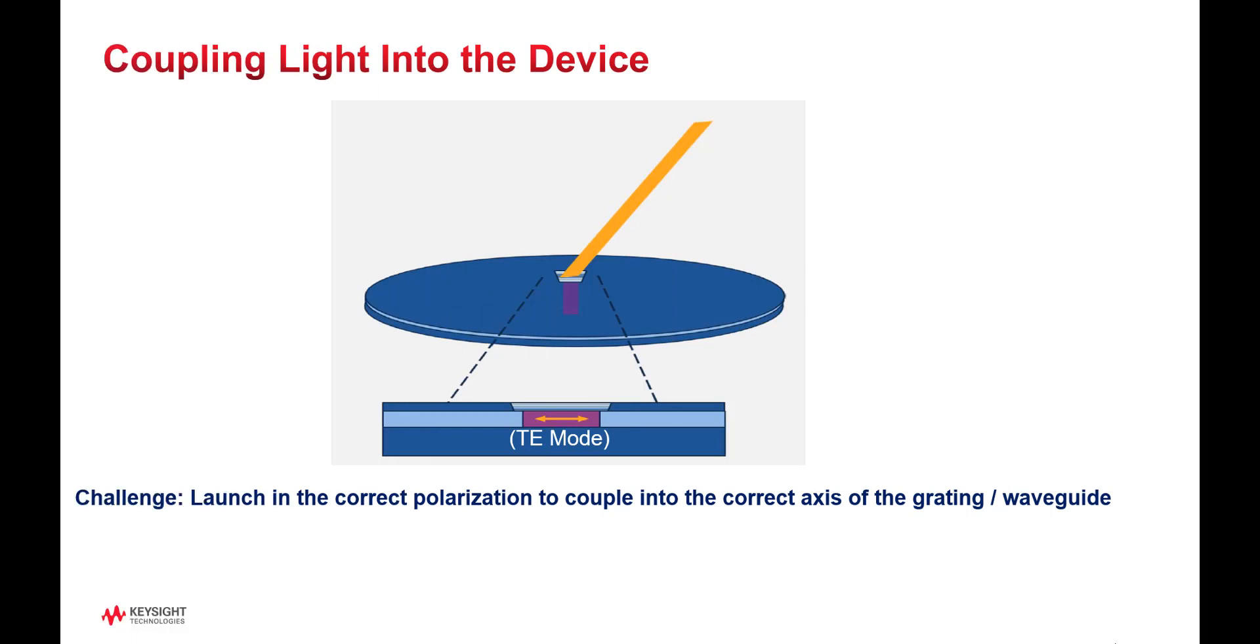When making on-wafer measurements of integrated photonic devices, it's often necessary to launch the light in a specific state of polarization, to align to a grating coupler, for example, and to do this quickly to reduce the measurement time.